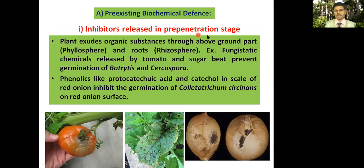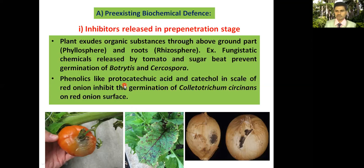Pre-existing biochemical defense — inhibitors released in the pre-penetration stage: plants exude organic substances through above-ground parts (the phyllosphere) and roots (the rhizosphere). For example, fungistatic chemicals released by tomato and sugar beet prevent germination of Pythium and Cercospora. Phenolics like protocatechuic acid and catechol on the scale of red onion inhibit germination of Colletotrichum circinans on the red onion surface.